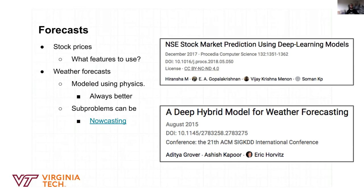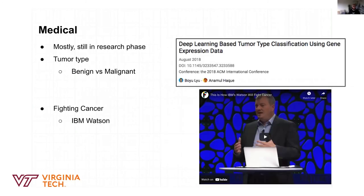The medical field is increasingly using machine learning. One of the major hurdles is regulations since it's a heavily regulated industry. As access to electronic medical records increases, it becomes more possible to process that data and diagnose diseases. This is an example of IBM Watson — IBM's AI engine — which uses medical records to make cancer diagnoses. A video demonstrates how a physician validates patient information, and Watson brings up various treatment options based on electronic health records and 15 million pages of medical literature it was trained on.